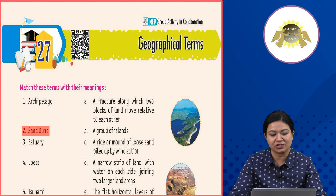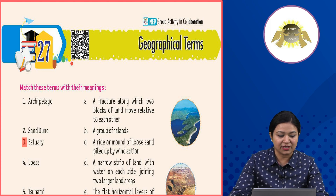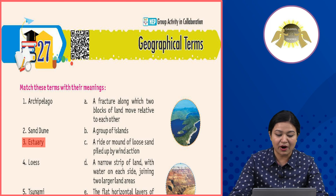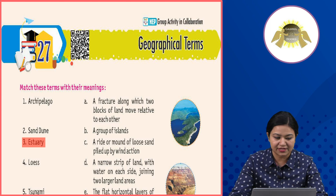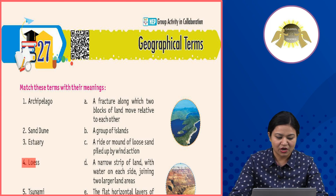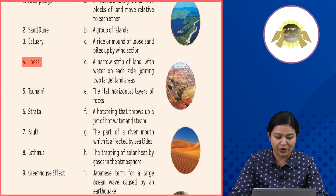Third: Estuary — the part of a river mouth which is affected by sea tides. Fourth: Loess — a fertile fine silt deposit carried by wind.